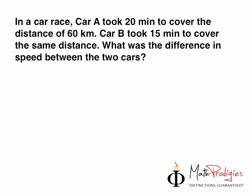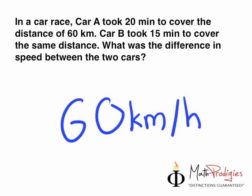Yesterday's question said, let's take a look here. In a car race, Car A and Car B, what was the difference in speed between the two cars? The answer if you're waiting for it is 60 kilometers per hour, and if you got it right, high five, you are a math prodigy. Good job.